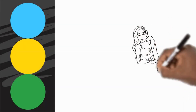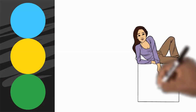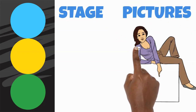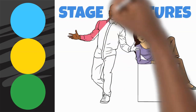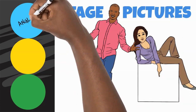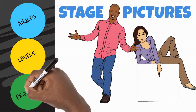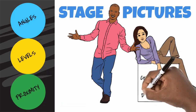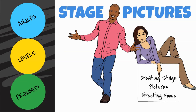Today, we're going to talk about stage pictures. Stage pictures are created by actors with one another. Pictures are created by the way actors stand, the position they choose, and their position in relation to other actors. We plan to discuss all the parts of pictures, as well as how to make them, and finally, how we use them to direct focus. Let's get to it!